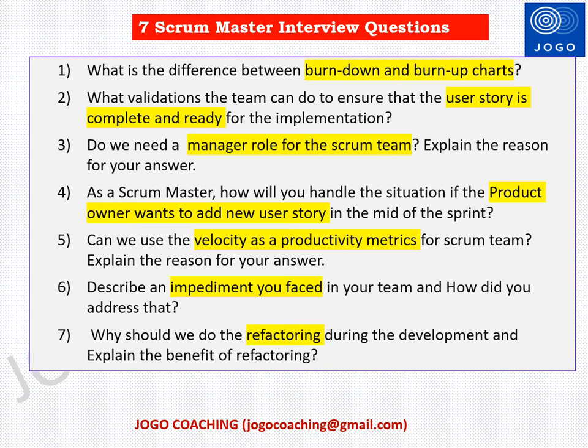The fourth question is: as a Scrum Master, how will you handle the situation if the product owner wants to add a new user story in the mid of the sprint? The fifth question is: can we use the velocity as the productivity metrics for the Scrum team? Explain the reason for your answer. The sixth question is: describe an impediment you faced in your team and how did you address that? The seventh question is: why should we do refactoring during development and explain the benefit of refactoring?